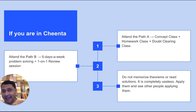Path B, which happens simultaneously, has five days a week problem solving and one-on-one review sessions every month. Make sure to attend those as well. More problems you are exposed to, better you are off.